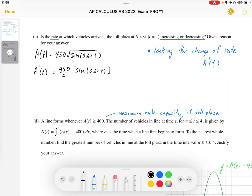So I'm applying the chain rule here. So negative one-half times, then I need to differentiate the inside. So cosine of 0.62t, and then I need to apply the chain rule again, so times 0.62.